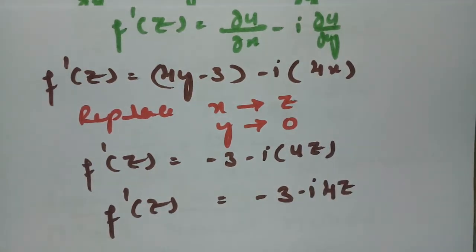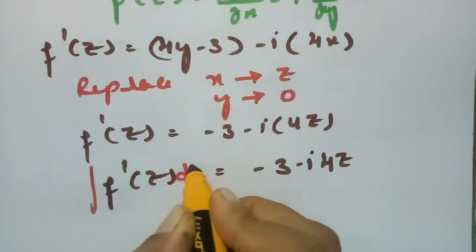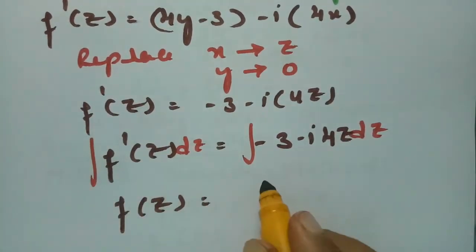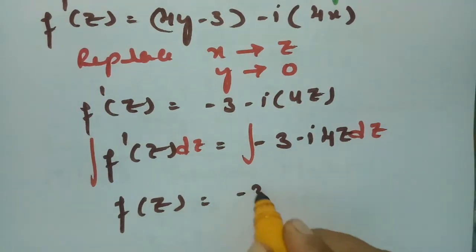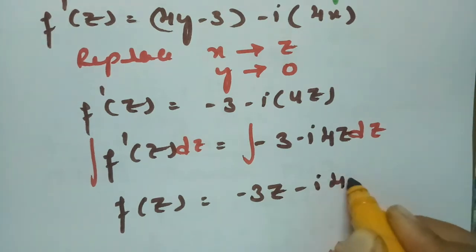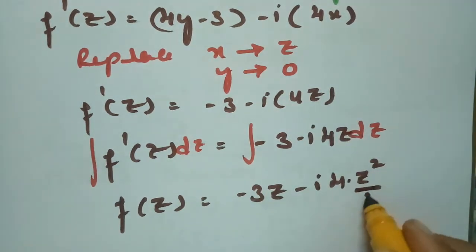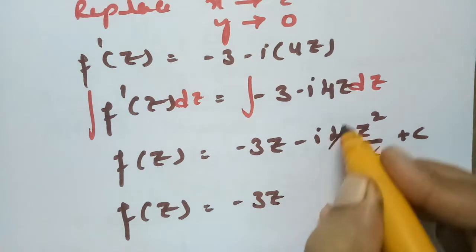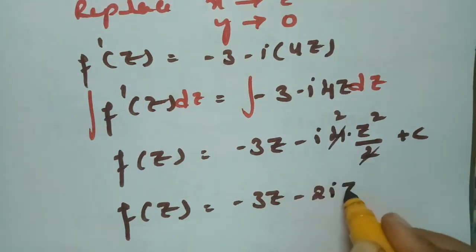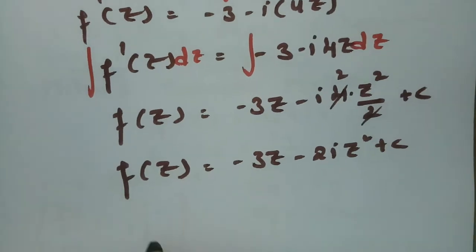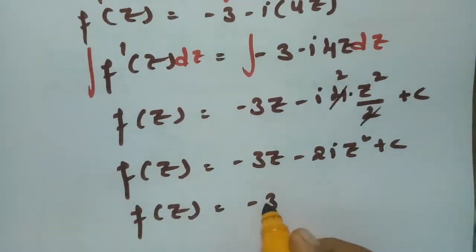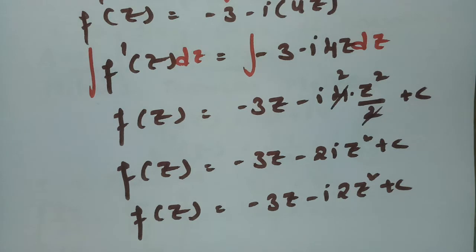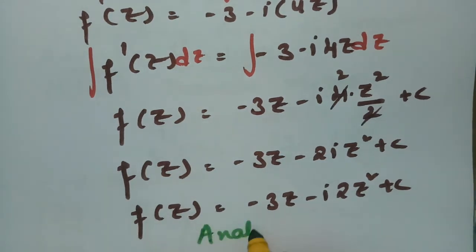Now integrating both sides with respect to z: f(z) = ∫(-3 - 4iz) dz = -3z - 4i·(z²/2) + c = -3z - 2iz² + c. Therefore f(z) = -3z - 2iz² + c, which is the required analytic function.